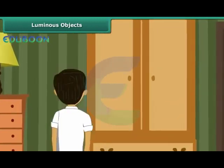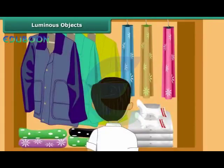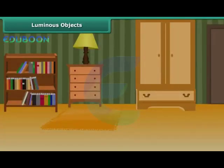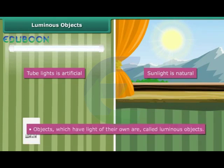You are getting late for school and are not able to find your socks. You search for them in the cupboard. Since the cupboard is dark, you switch the tube lights on. Once you look at the socks, you switch the lights off because there is sufficient daylight. We just talked about two types of light: the light from the tube lights and daylight, which is the light from the sun. While sunlight is natural, light from the tube lights is artificial. Objects which have light of their own are called luminous objects. Thus, both sun and tube lights are luminous objects — sun is a natural luminous object and tube lights are artificial, man-made luminous objects. Luminous objects are sources of light.